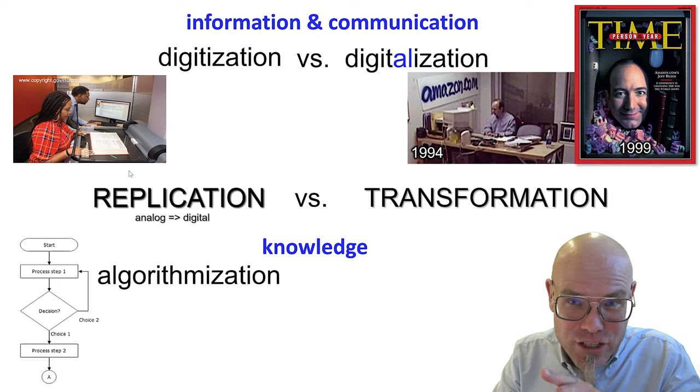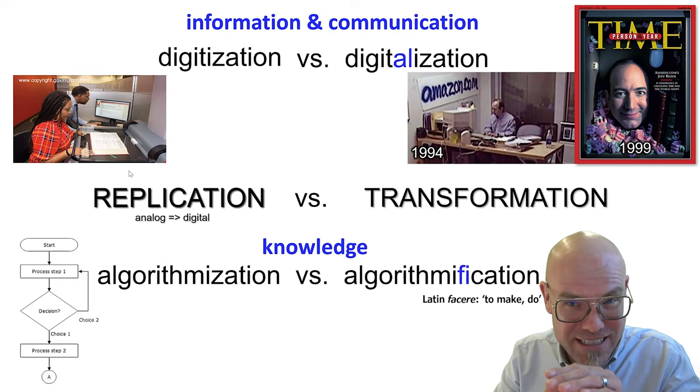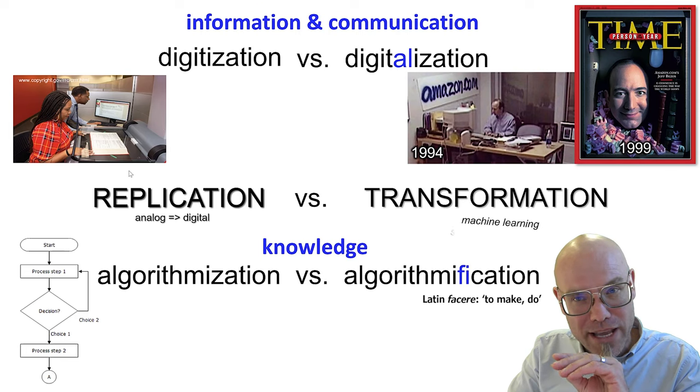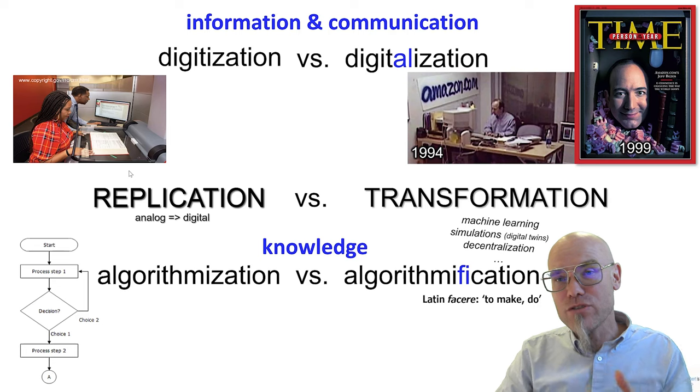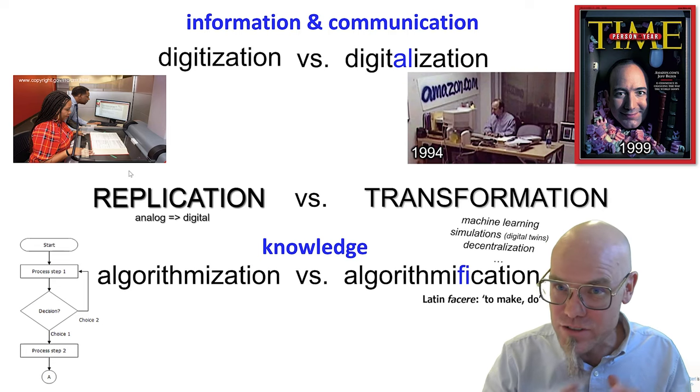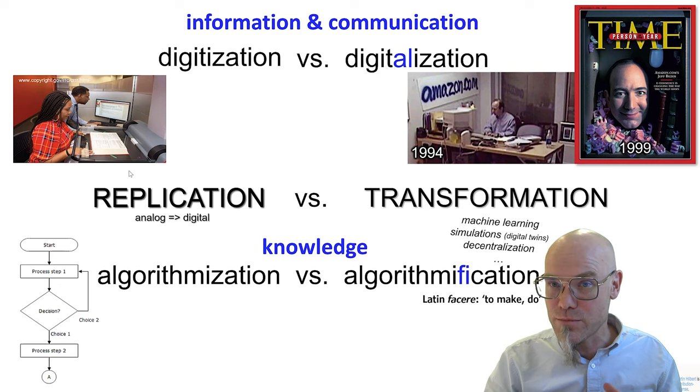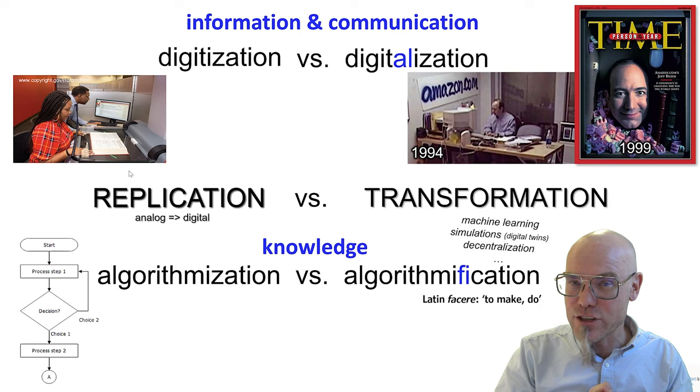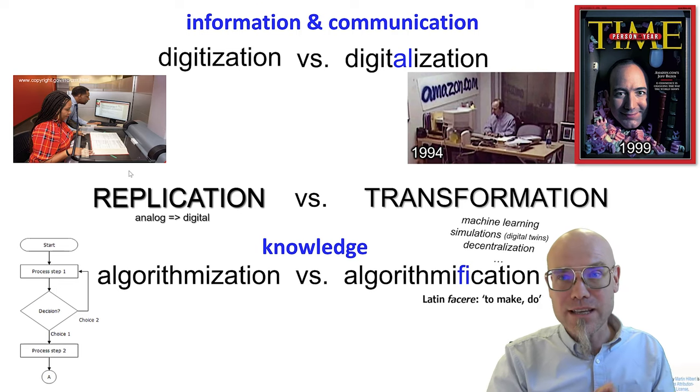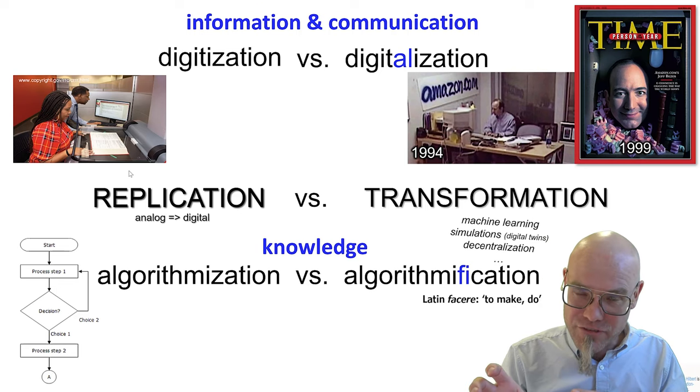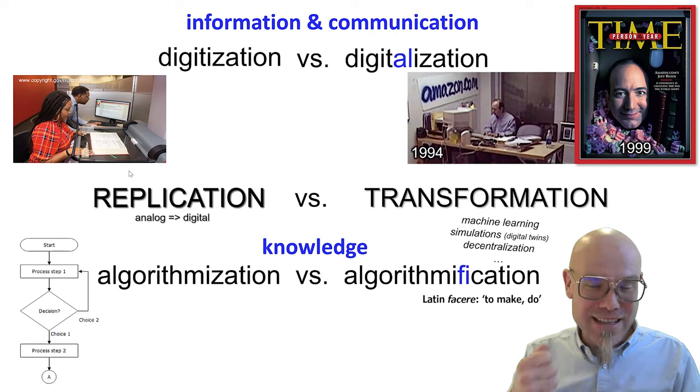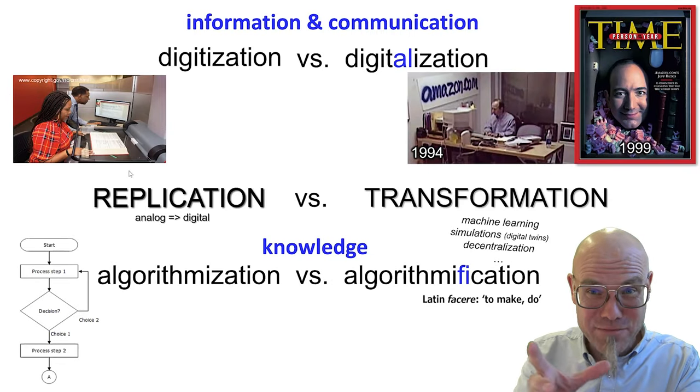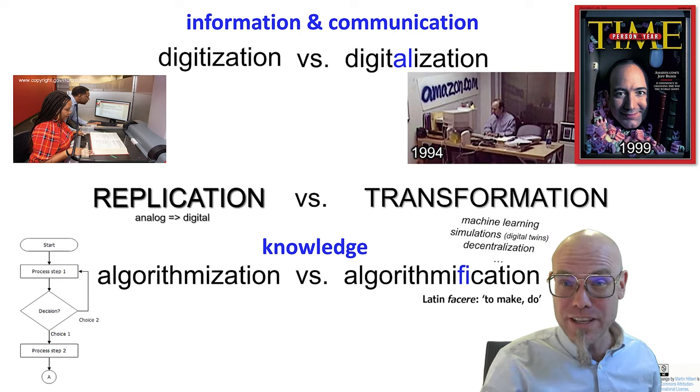Now algorithmification - the facere is to make, to do - it also has some qualitative changes. We have some qualitative changes in the way we execute these algorithms. We do that with machine learning, with simulations, digital twins. I mentioned digital twins already in this lecture. With decentralization, proposals of the blockchain, how blockchain can help us algorithmify processes and create new applications. Machine learning and artificial intelligence are probably one of the most central ways of how we algorithmify processes, innovate, make them differently. In the next presentation, we'll have to talk more about artificial intelligence.